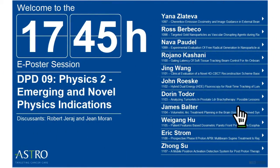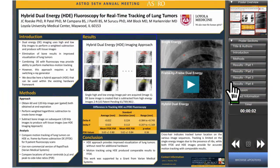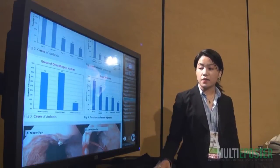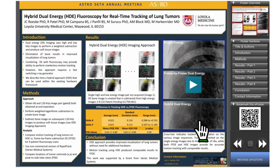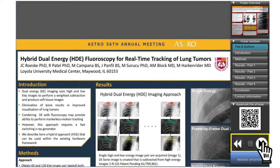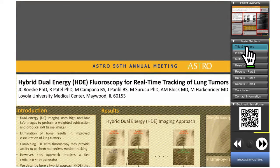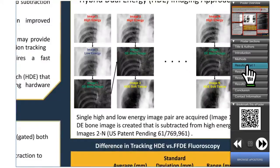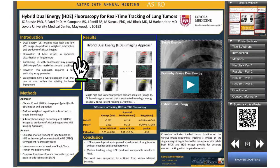Please ensure that you first select your poster among the ones listed on the screen. The software is easy to navigate through and allows you to present the sections of your poster either in sequential order by touching the bottom right arrows, by selecting the sections on the right panel, or by clicking directly on the section that you wish to present.